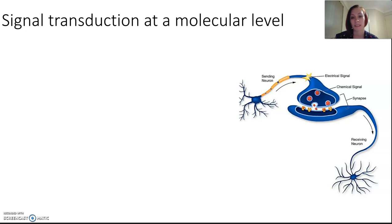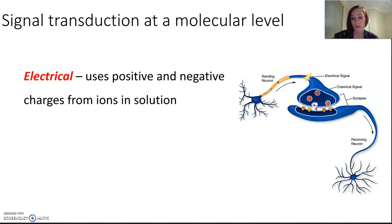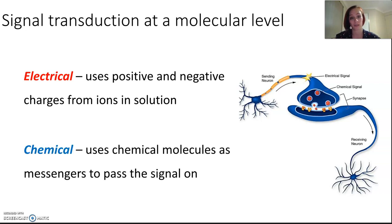Signal transduction at a molecular level means that we're sending the signal somewhere or the passage of the signals. That's what that phrase signal transduction means. There are electrical signals using positive and negative charges from the ions in the solution. There's also chemical signals that we can send and they use chemical molecules as the messengers to pass on.